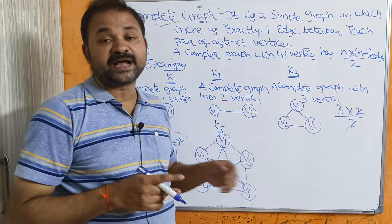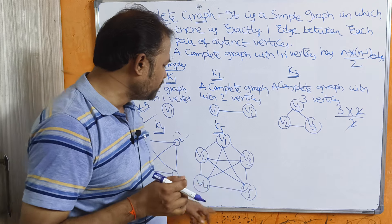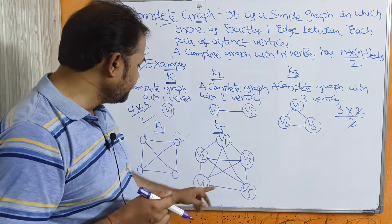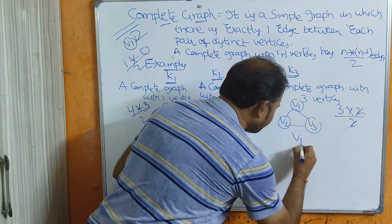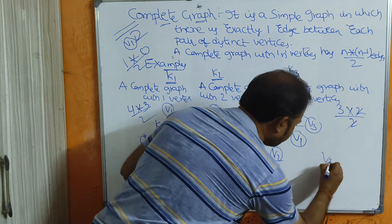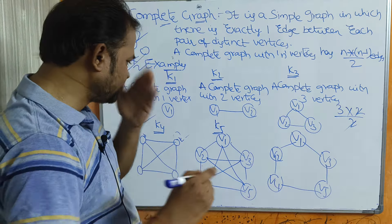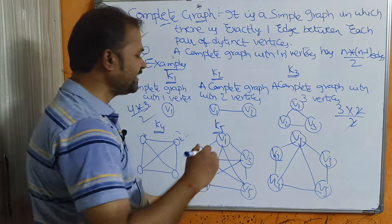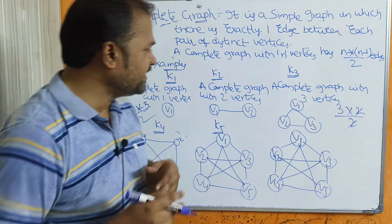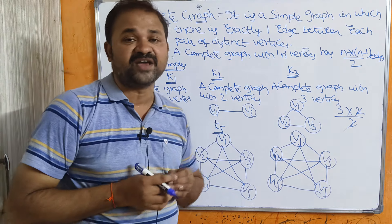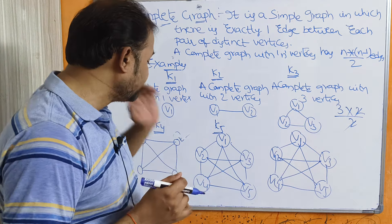A complete graph K5 has 5 vertices. From V1 we have edges to V2, V3, V4, V5. From V2 to V1, V3, V4, V5. From V3 to V1, V2, V4, V5. To draw this graph, first draw the outer pentagon structure, then a triangle inside, then connect the remaining edges. Using the formula: 5×(5−1)/2 = 10 edges.